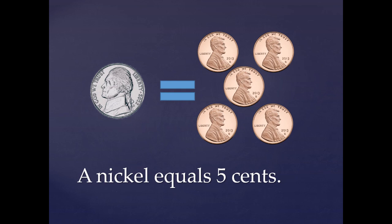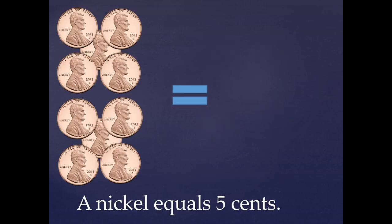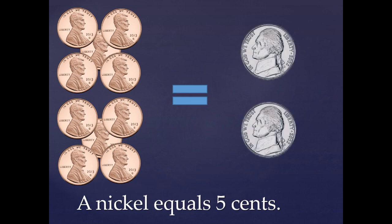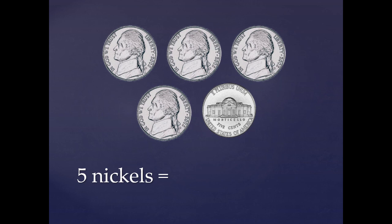So I want you to remember that a nickel equals five cents. Now here, I have more than five cents — in fact, I have double that. So if a nickel equals five cents, how many nickels will I need? One, two. I would need one nickel for every group of five cents. If you have five pennies, you can trade it in for a nickel. Here I have five nickels. I would like for you to count with me, and we're going to count by five. Five, ten, fifteen, twenty, twenty-five. Five nickels equals twenty-five cents.